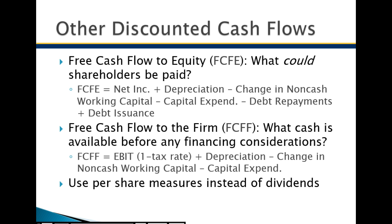Free cash flow to the firm uses EBIT (earnings before interest and tax) multiplied by (1 minus the tax rate), so we take out the amount we'd have to pay in taxes. EBIT is basically operational income. We add back depreciation — a non-cash charge that's used to lower net income for tax purposes. Even though it looks like a loss on paper, it's really cash you have, so we add it back to create the true cash flow picture.